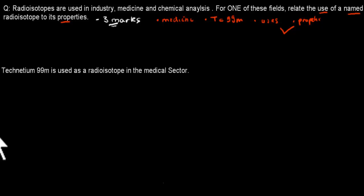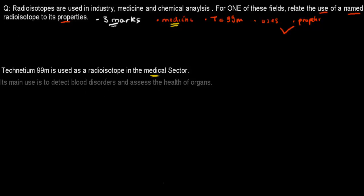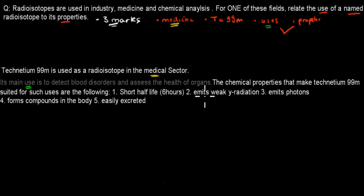First, what I wrote is Technetium 99M is used as a radioisotope in the medical sector. I've chosen medicine in the medical sector. Then I wrote, its main use is to detect blood disorders and assess the health of organs. So here I've given its use, which is also important.